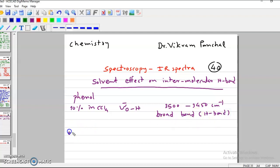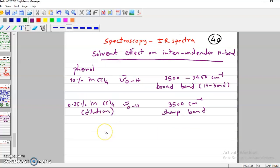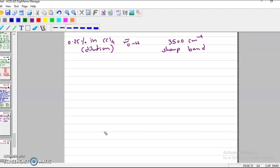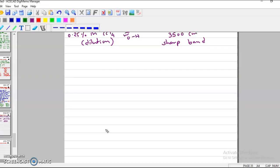But if we take 0.25% solution in carbon tetrachloride, this will be very dilute solution, so it is called dilution. Then we will observe OH stretching band at 3500 cm inverse and it will be a sharp band, not broad band. So here you will find the influence of solvent or dilution or concentration on intermolecular hydrogen bonding.